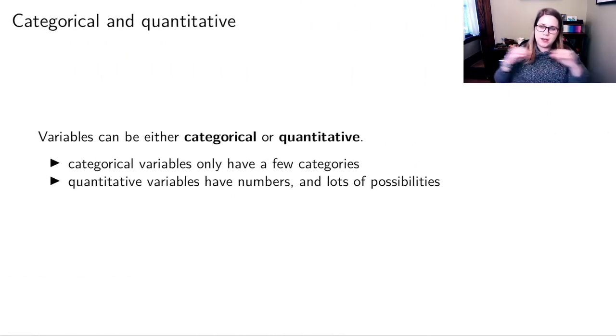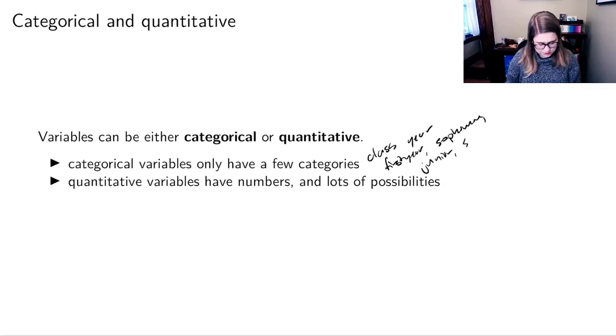So we've got our cases or our observations, we've got our columns, which are the variables. And when we think about our variables, we can also categorize them as categorical or quantitative. If you have a categorical variable, it only has a few possible categories. So you could think about class year, which probably only has a few possibilities, you could be a first year, a sophomore, a junior, or a senior. But there probably aren't a lot more choices than that. You could be a super senior, maybe you're a high school student who's taking a college class. There are some exceptions, we might have to condense down to just a set of categories. But it's not like there are infinite possibilities for your class year, those are pretty limited.